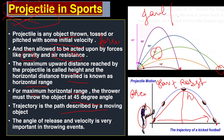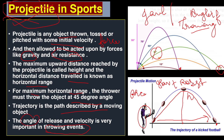In throwing events such as javelin or shot put, two things are most important: the angle at which you throw and the force with which you throw. If the angle is 45 degrees, horizontal distance is maximized. The more force applied, the farther the object travels. The angle of release and the velocity are both important in throwing events.